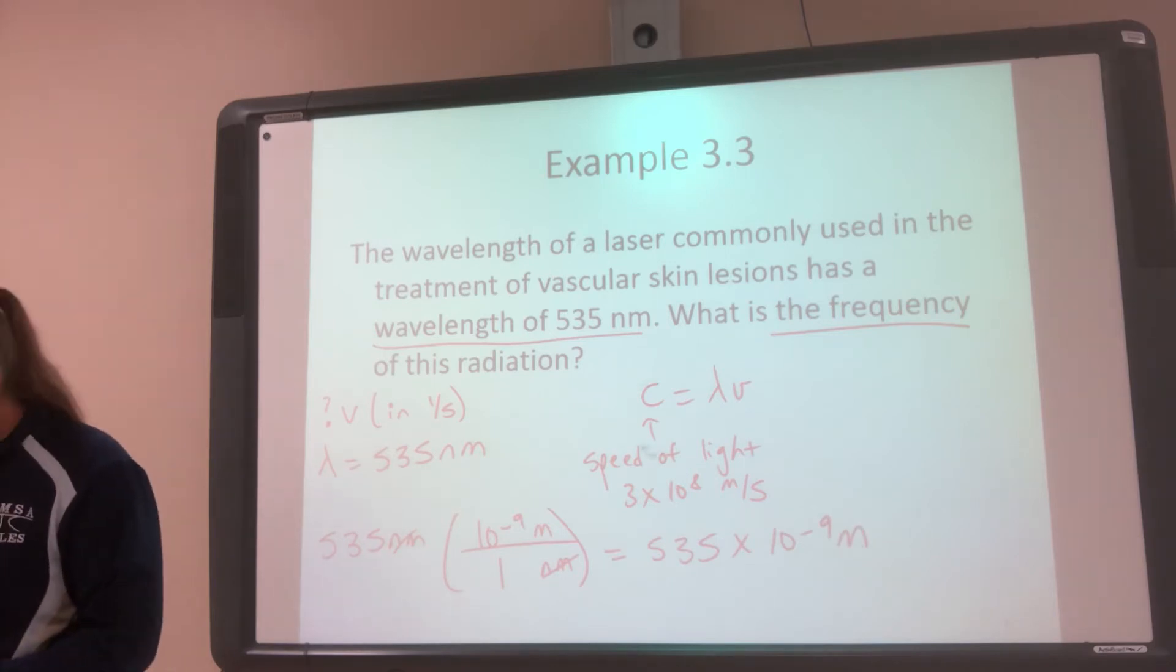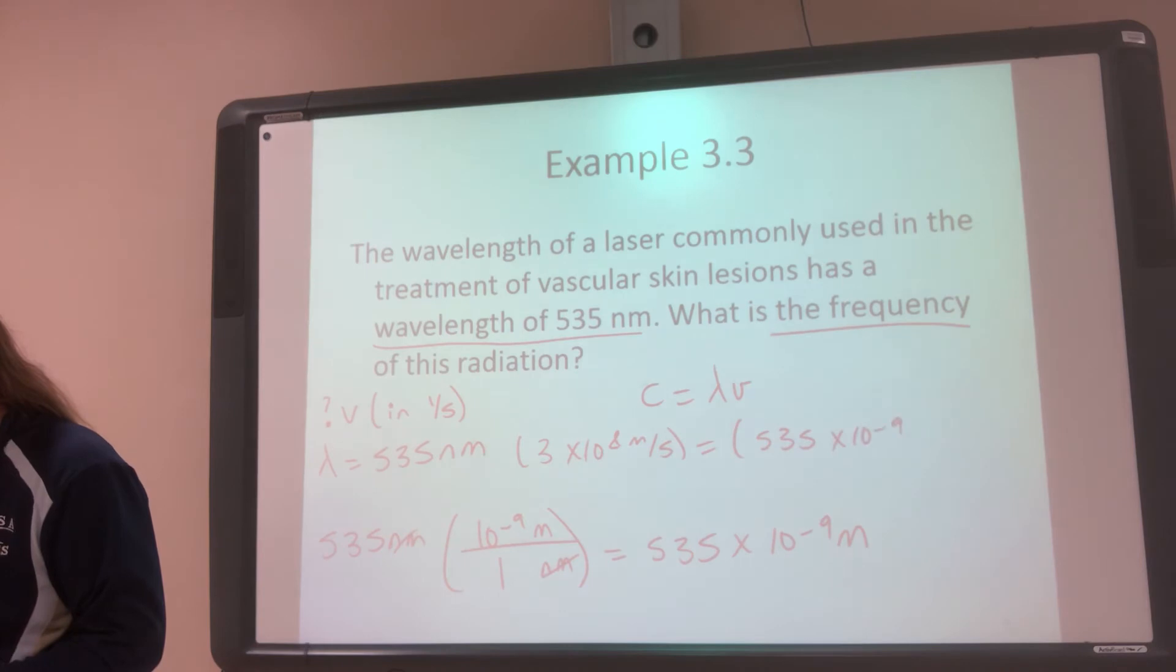So now I can plug this all into my equation. C is equal to lambda V. So we said C was 3 times 10 to the 8th meters per second. Lambda is 535 times 10 to the negative 9 meters, and then frequency.